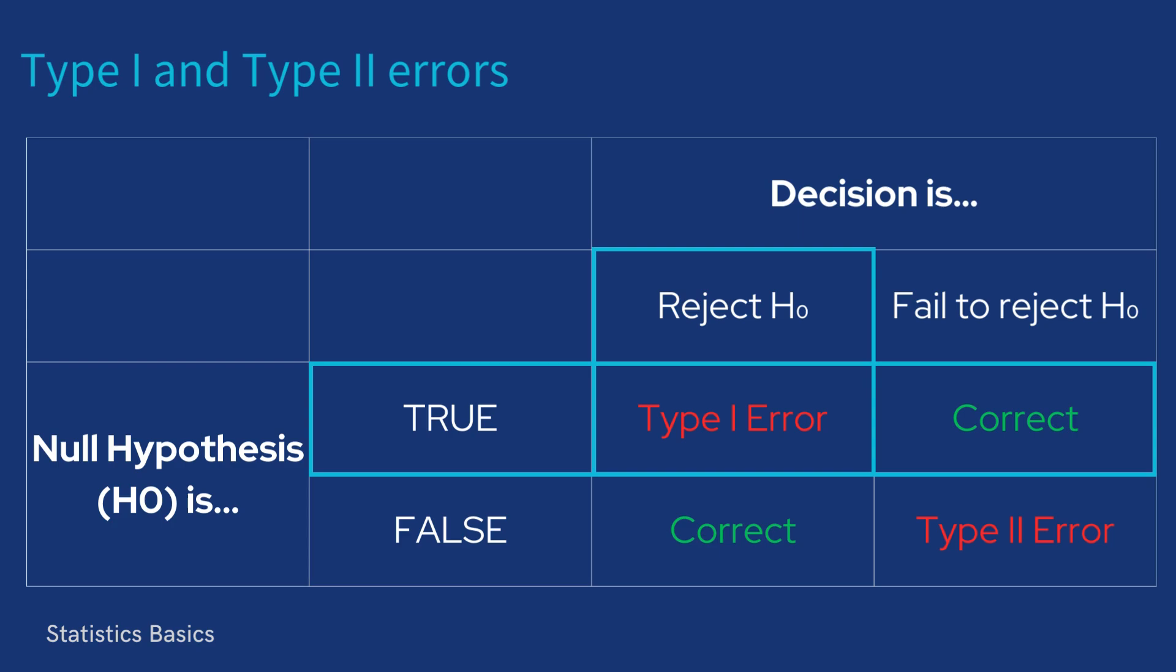This means we've incorrectly concluded that there's an effect or difference while in reality there isn't. When the null hypothesis is true and the decision is to fail to reject the null hypothesis, a correct decision is made. This means we've correctly concluded that there's no effect or difference.